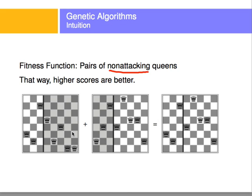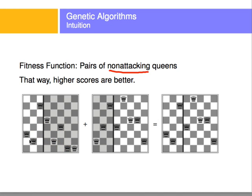Let's look at some non-attacking queens on a board and compute the fitness function. Counting the non-attacking pairs: six non-attacking pairs from the first queen, then seven, eight, nine, ten, eleven — eleven non-attacking pairs from the second queen, and then twelve, thirteen, fourteen, fifteen, and so on — you will realize that there are 23 pairs of non-attacking queens here. That's how we compute the fitness function.